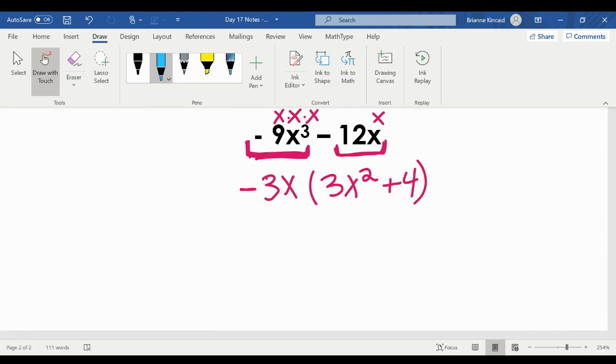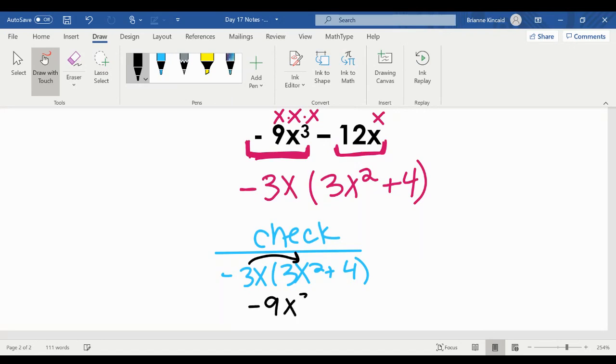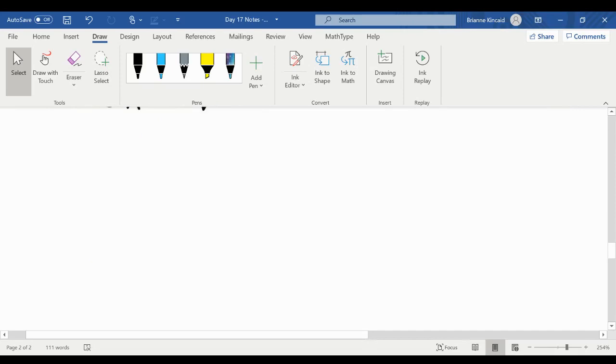And then we want to do our check. So I'm going to rewrite my problem. And I'm going to distribute. Negative three times positive three is negative nine. x times x² is x³. Negative three times four is negative 12. x times itself is x. It's what we started with originally. We can box in our answer.